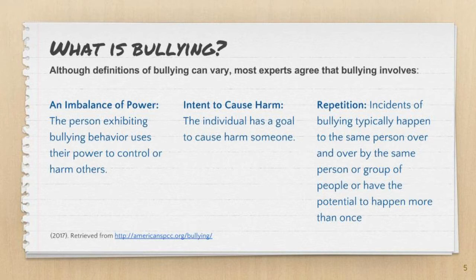Most bullying occurs because we are different from one another. Kids get teased because they are built differently, or they get left out of a group because someone doesn't like the way they dress or is jealous of their looks, abilities, or possessions. The truth is that we are all different but also very similar. If we take the time to get to know each other, we will see that our differences make us unique and interesting. As long as there are differences in the way we look, dress, act, or think, some people will respond to those differences in a negative way.